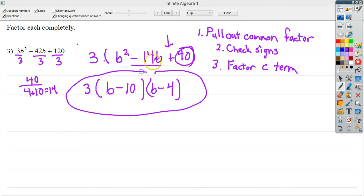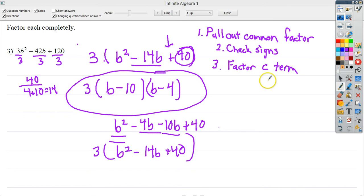And if I wanted to go back and check it, I would do the distributive property first. So you'd end up with b squared. I would do the distribution and then end up with minus 4b minus 10b plus 40. And I'd combine these two together and end up with b squared minus 14b plus 40. And then I'd do everything times three and it would give me my original equation. So that one works out just fine and dandy.